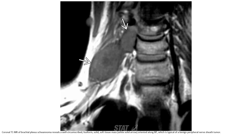T1 MRI of Brachial Plexus Schwannoma reveals a well-circumscribed fusiform solid soft tissue mass oriented along the Brachial Plexus, which is typical of a benign peripheral nerve sheath tumor. Treatment is surgical excision, which is usually curative; tumors rarely recur.